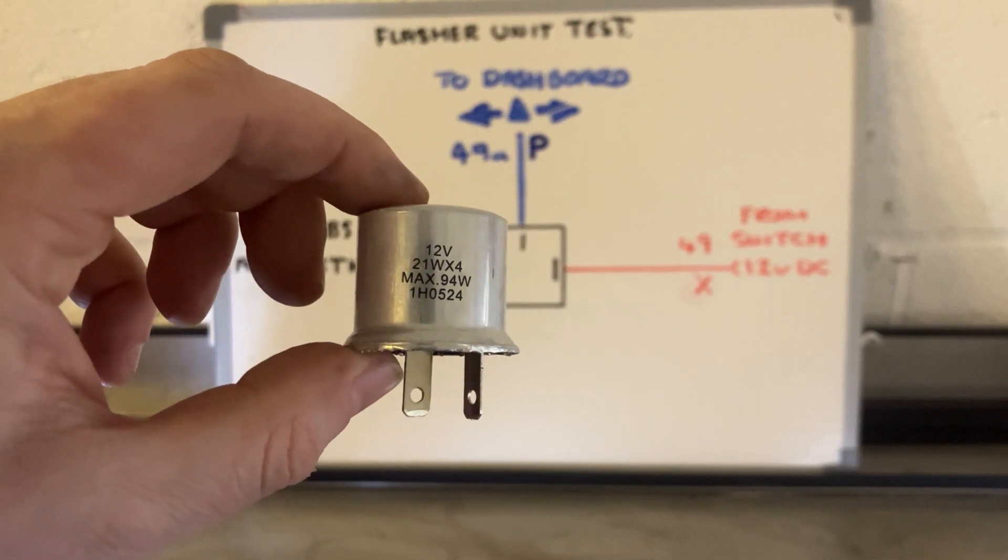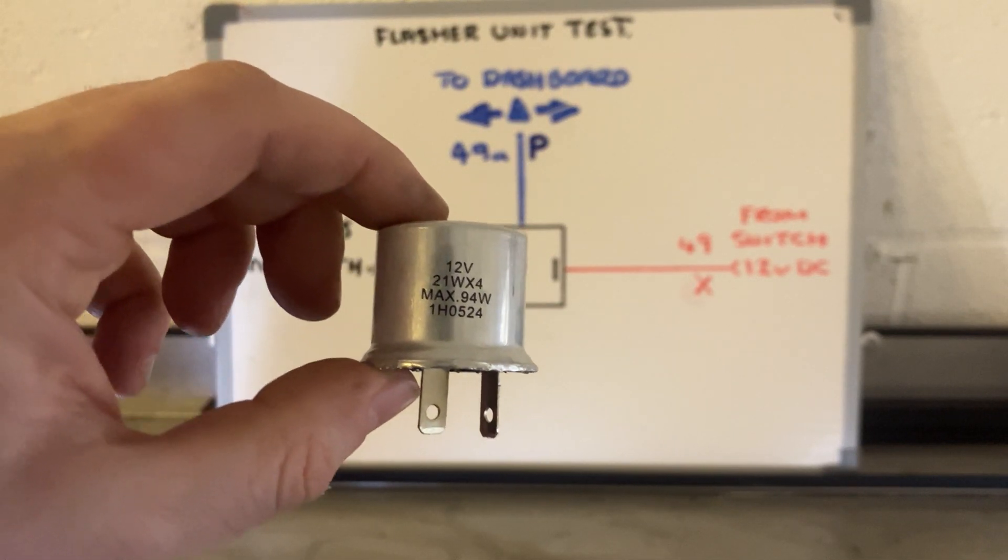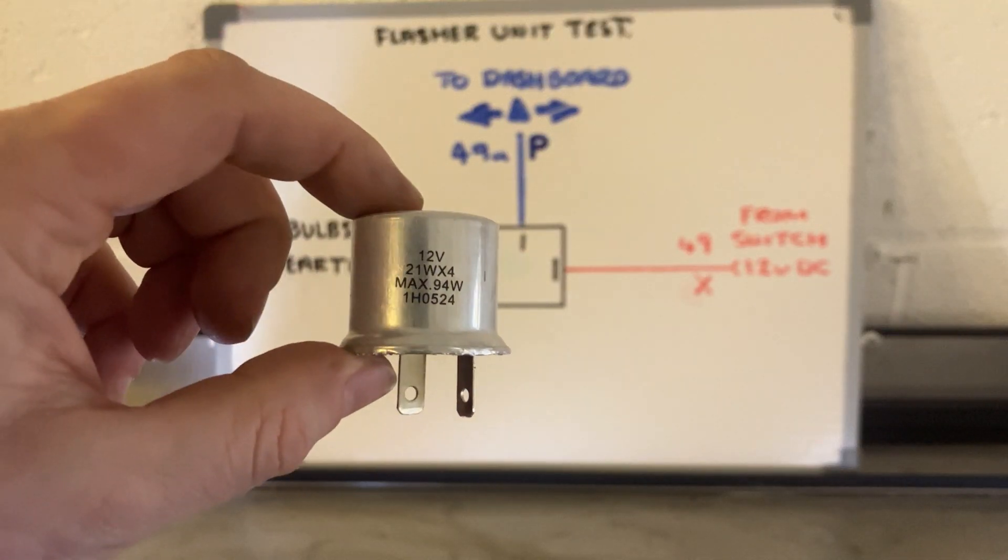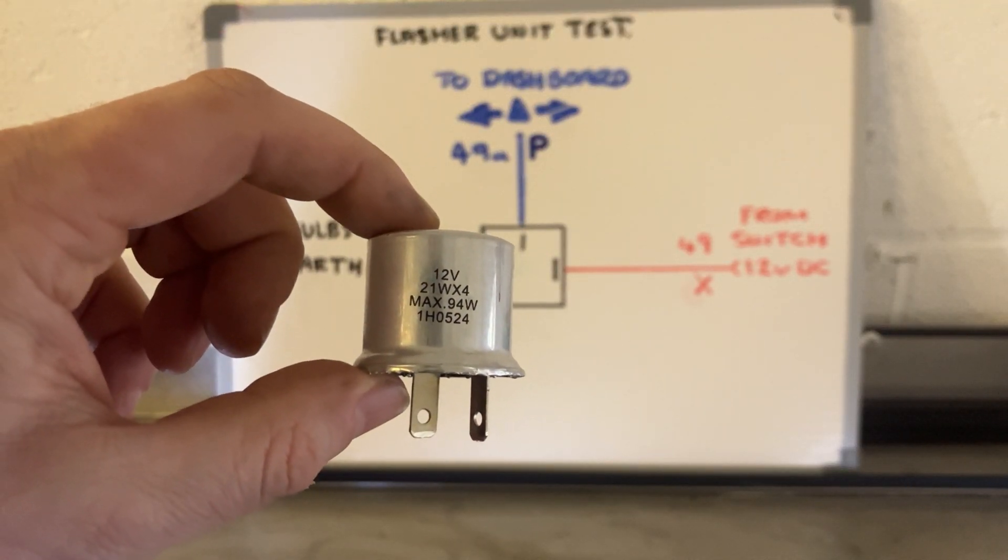Hi everyone, just a quick video on indicator flasher can or flasher relay units. What they are, what they do and how to test them if you think that yours is faulty.